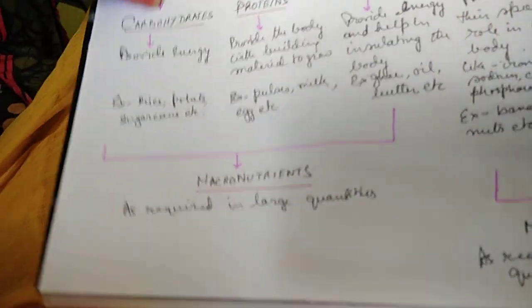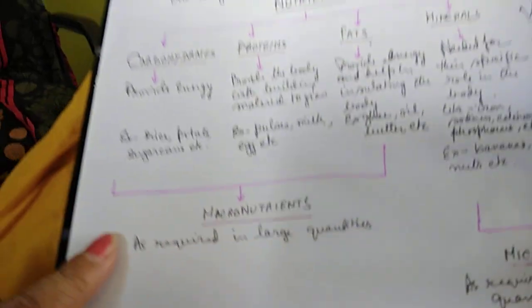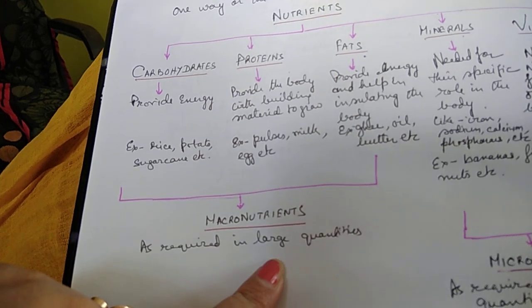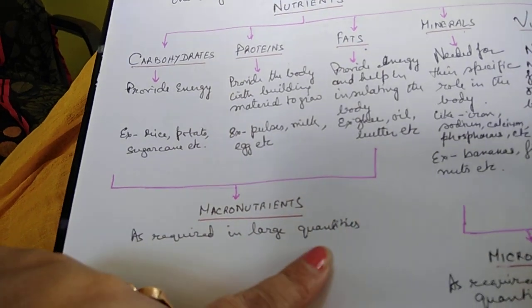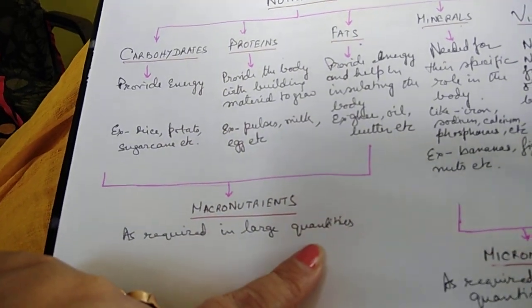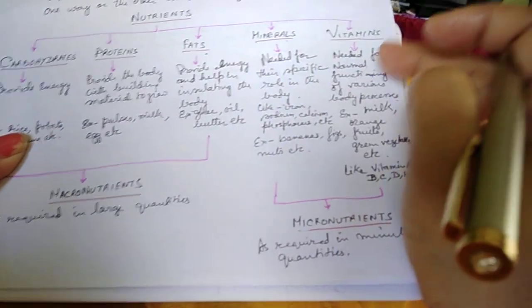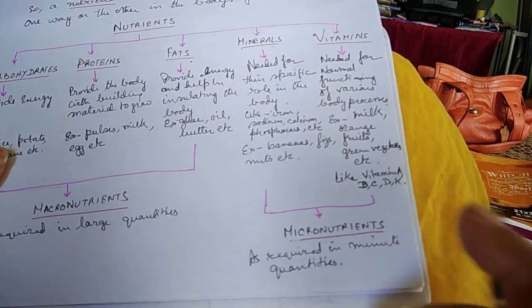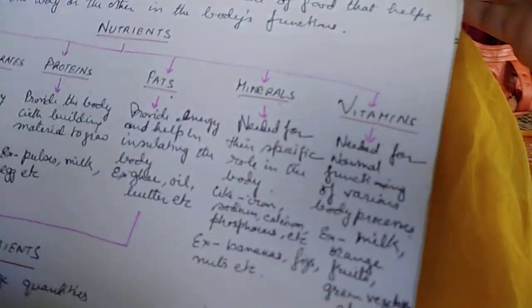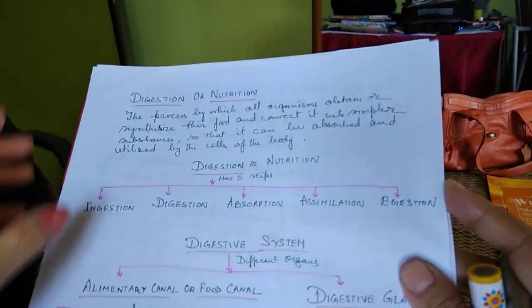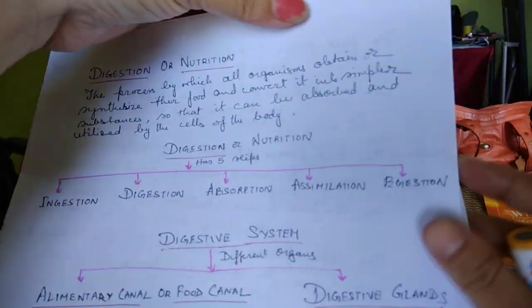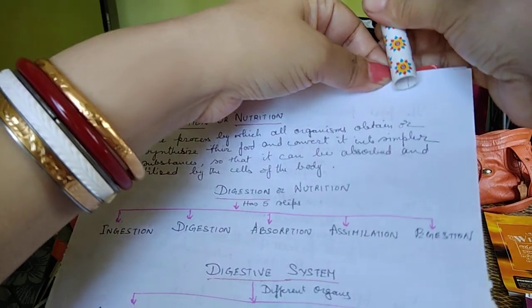Carbohydrates, proteins, and fats are called macronutrients as they are required in large quantities, whereas minerals and vitamins are called micronutrients as they are required in minute quantities.